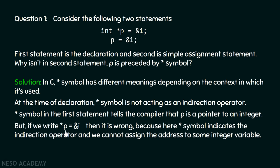But if we write `*p = &i`, that is wrong. Here the star symbol acts as an indirection operator and we cannot assign an address to an integer variable. Writing star p means we are accessing the location pointed by the pointer and trying to replace that variable's content with the address of variable i — but pointers hold addresses while variables hold values.